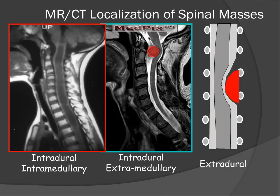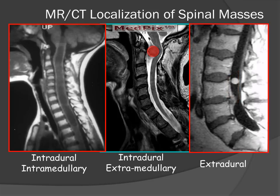And here we have an example of an extradural lesion, the most common and classic presentation for a disc herniation. Notice that this patient also has a lesion that is intradural but extramedullary, which in this case was a paraganglioma.